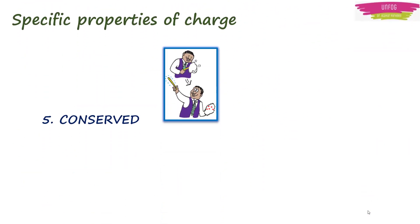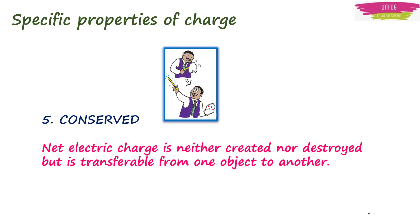As we discussed in the last lecture, charge is conserved. That is, net electric charge is neither created nor destroyed, but it is transferable from one object to another. Therefore, net charge of a closed system never changes.